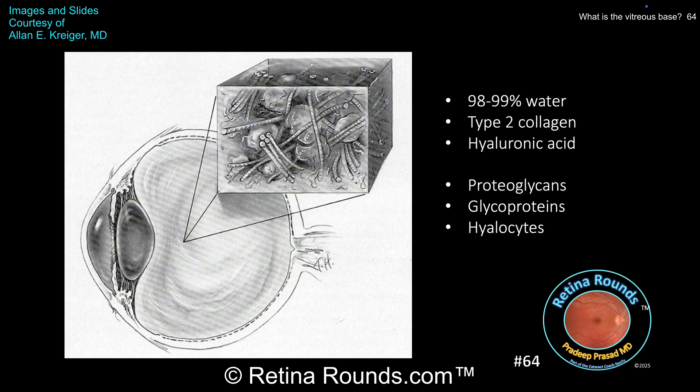98% to 99% of the vitreous body is composed of water. Type 2 collagen fibers give the vitreous body some structure and hyaluronic acid gives the vitreous body a gel-like consistency. Vitreous is also composed of proteoglycans, glycoproteins, and hyalocytes.